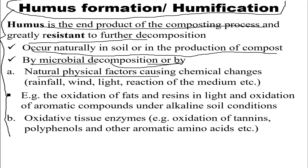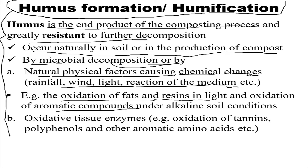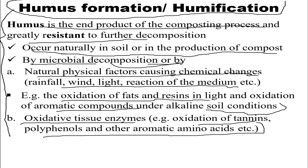Humus formation can occur through natural physical factors causing chemical changes, such as light reactions of the medium. Examples include oxidation of fats and resins in light and oxidation of aromatic compounds under alkaline soil conditions. Another factor involves oxidative tissue enzymes, including oxidation of tannins, polyphenols, and other aromatic amino acids. The other pathway is microbial decomposition, which can happen through natural physical factors or through oxidation of tissue enzymes.